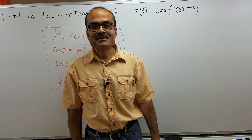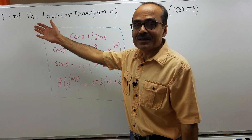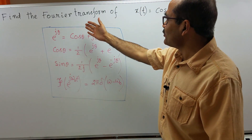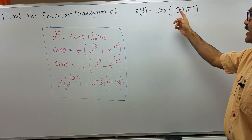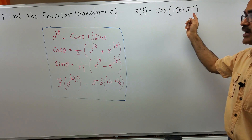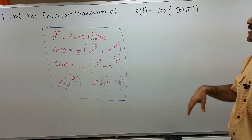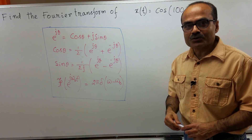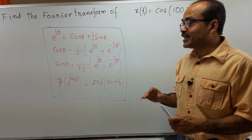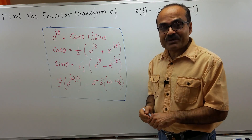Hi, I am Sushantu. In this session, I will find the Fourier transform of x(t) equal to cosine 100 pi t. Now, cosine 100 pi t is a periodic function, so it has its own Fourier series expansion.